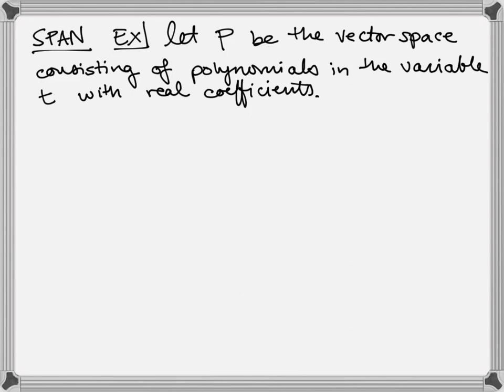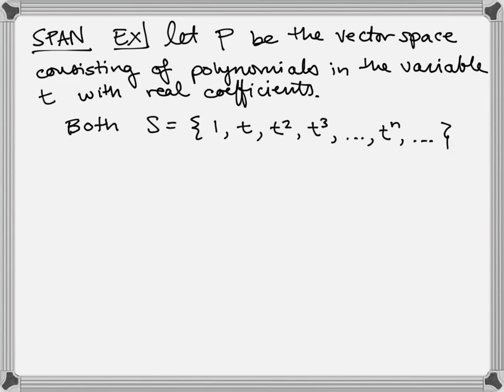We've got to have zero in there, or else it wouldn't be a vector space. What I'd like to do is show you that I've got two spanning sets. There's one that to me seems like the obvious one — all of the powers of t — and there's another one. In fact, there are lots of other ones that we could use.